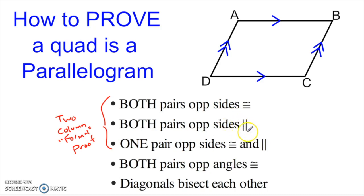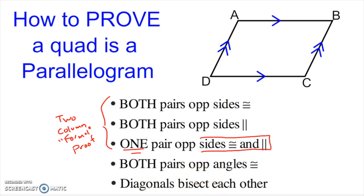So if you can get both pairs of opposite sides parallel, it's a parallelogram. Get both pairs of opposite sides congruent, it's a parallelogram. Get one pair — just one pair — that is both congruent and parallel, and you've also got yourself a parallelogram. Knowing why these work is important; it's a great exercise to try on your own. But for this video we'll take these as they are and jump into some proofs.